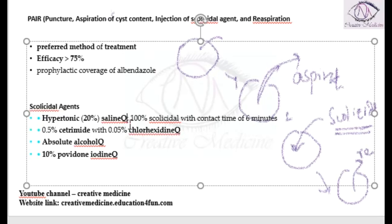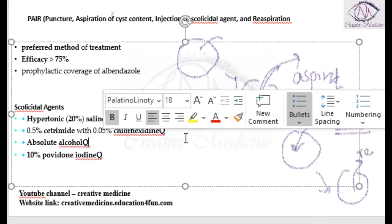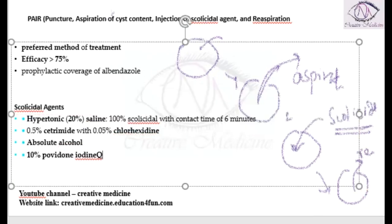We can use hypertonic saline which is 20% of hypertonic saline. This 20% of hypertonic saline is 100% scolicidal if the contact time is almost 6 minutes.